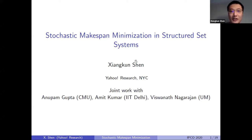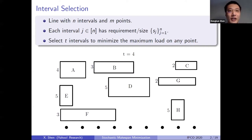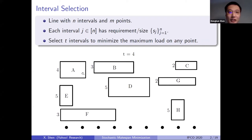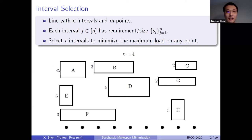Let me start this talk with an application of our work and then introduce the more general setting later. Consider the interval selection problem. In this problem, we are given n points on a line and n intervals. Each interval has a size associated with it, and we want to select T of the intervals. If we choose one interval in the solution, it will induce its size on all the points it passes on the line. The number to the left side of each interval is its size, and in this example we require selecting four of them. The objective is to minimize the maximum load on any point along the line.